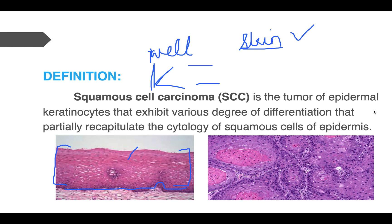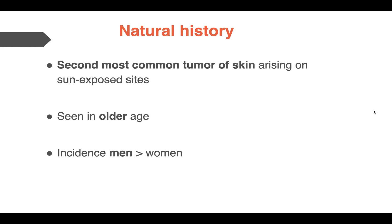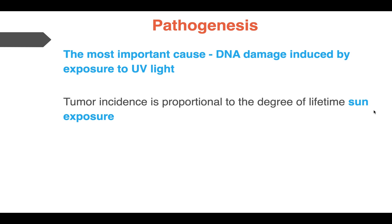Squamous cell carcinoma is mostly seen in the older age group, more commonly in men, and is mostly seen over sun-exposed sites. The main pathogenesis behind SCC is UV exposure. UV ray damage is the most common pathogenesis behind SCC, which is also known by the abbreviation SCC. The most common cause is DNA damage induced by exposure to UV light, and tumor incidence is proportional to the degree of lifetime sun exposure.